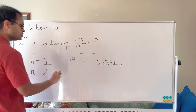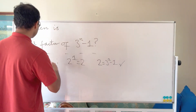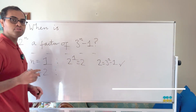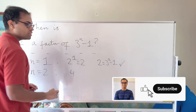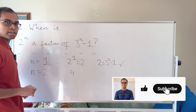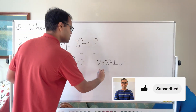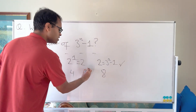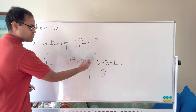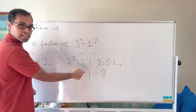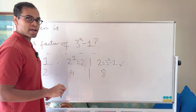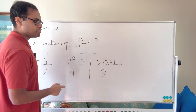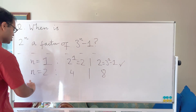For n equals 2, we get 2^2 which equals 4, and 3^2 minus 1 which is 9 minus 1, which is 8. And 4 is a divisor of 8. This vertical bar sign means 'divisor of' in mathematical notation.